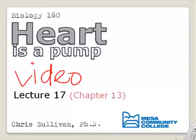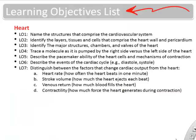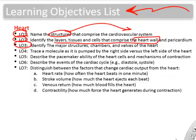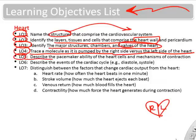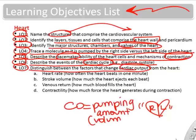This video is about the anatomy and physiology of the human heart. The learning objectives we'll cover include the basic structures of the heart, cells in the heart including pacemaker myocytes and contractile myocytes, the events of the cardiac cycle, the pumping action of the heart, and the amount of blood the heart pumps — called cardiac output.